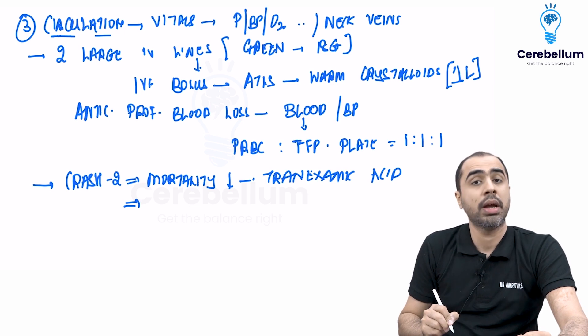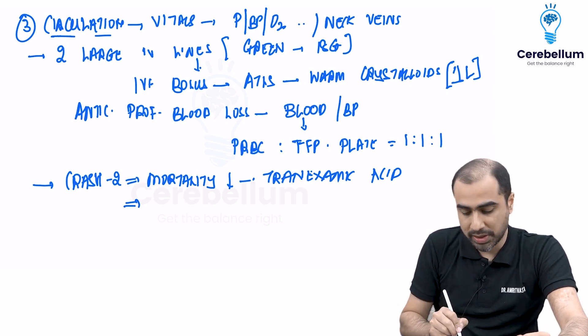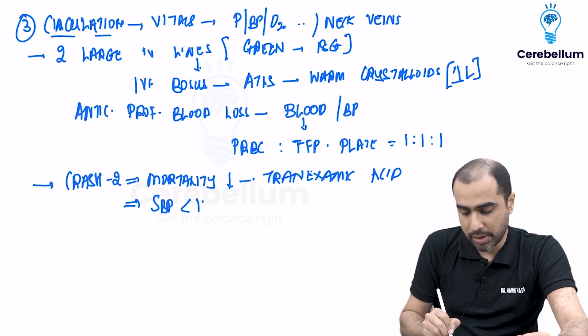You can give injection tranexamic acid to reduce mortality. And whom are you supposed to give? You are supposed to give this in a patient whose systolic blood pressure is less than 110, whose pulse rate is more than 110 per minute.